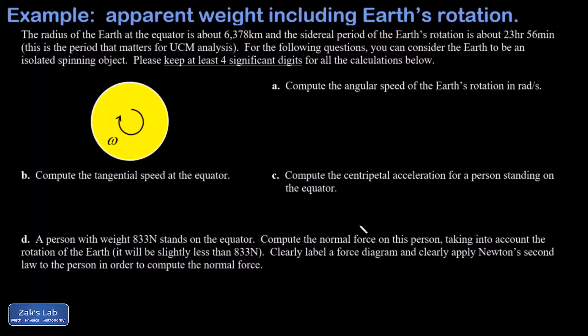In this problem we're exploring the idea that the spin of the Earth can actually change your apparent weight. This effect would be maximized at the equator. I have the radius of the Earth at the equator is about 6,378 kilometers, and I'm told the sidereal period of the Earth's rotation is about 23 hours 56 minutes.